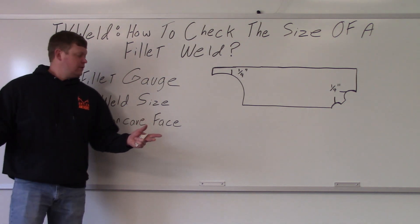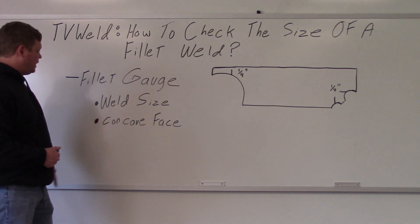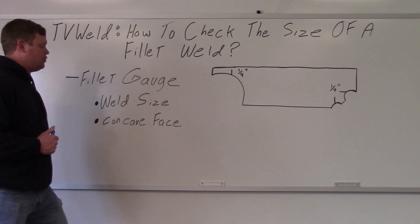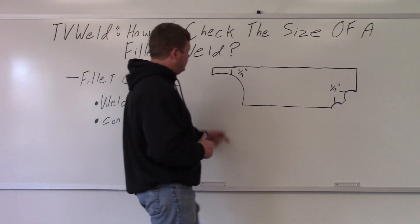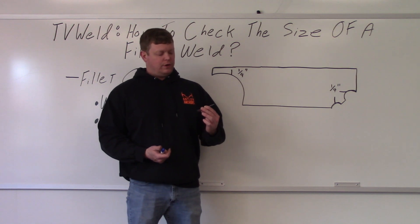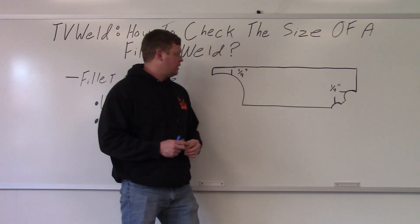So what is on a fillet gauge? A fillet gauge has a weld size on it and a concave face checker, if you will. And I drew it over here, a blown up one. And you can see I have one right here. It's for like a one inch and a three quarter inch fillet weld. That's what it looks like right there. That's just one. And I'll zoom in in a second.